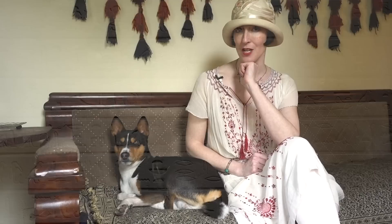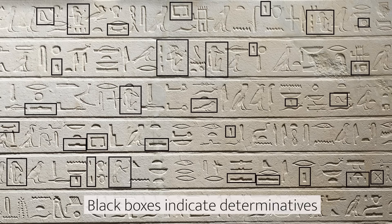The other really significant aspect of determinatives in ancient Egypt is that hieroglyphs do not have word breaks. When you see a line of hieroglyphic text, one word follows another without a space. But if you learn to recognize the determinatives, it is surprising how quickly you can pick up on the fact that this is a determinative, and so that must be the end of a word.